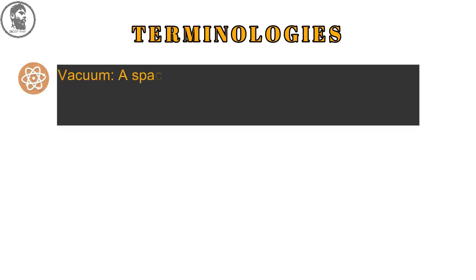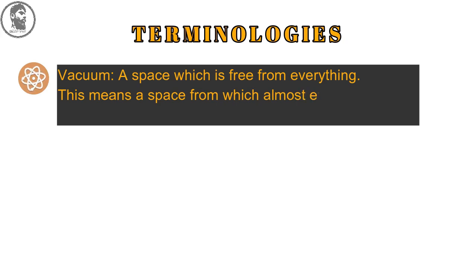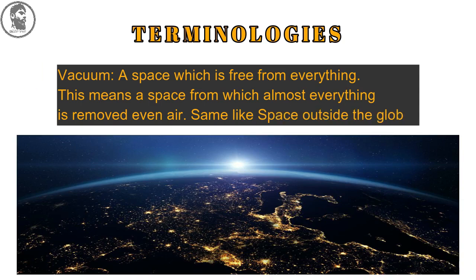Before going to know about construction, let's learn some terminologies. First, vacuum: Vacuum is a space which is free from everything. This means it's a space from which almost everything is removed, even air, same like space outside the globe.